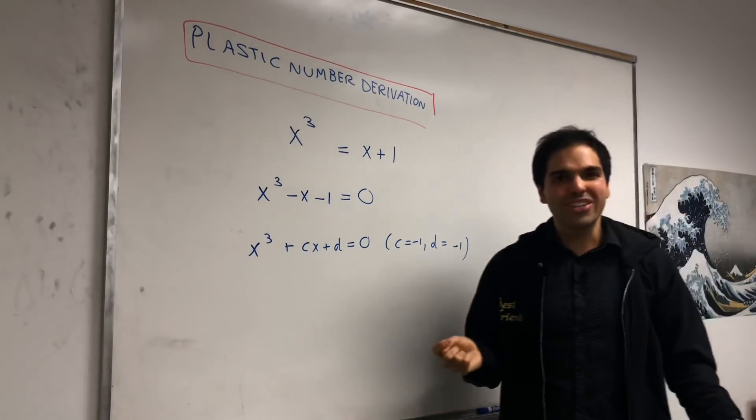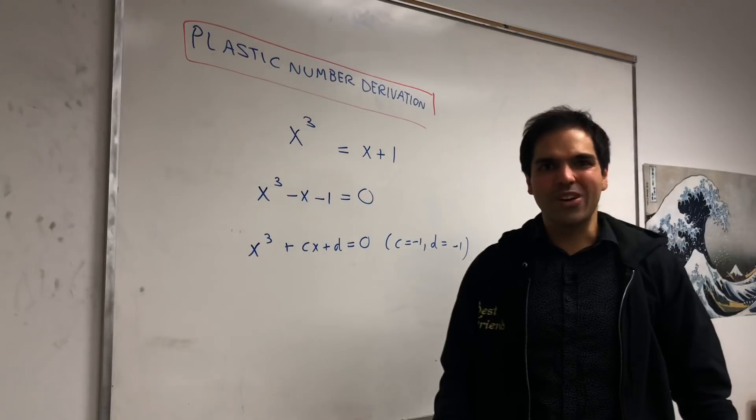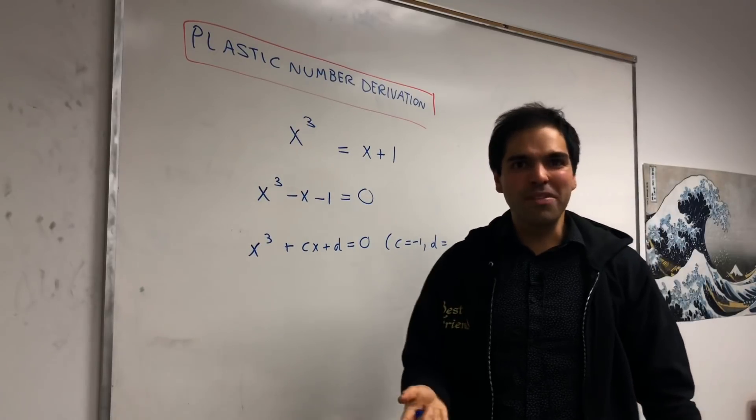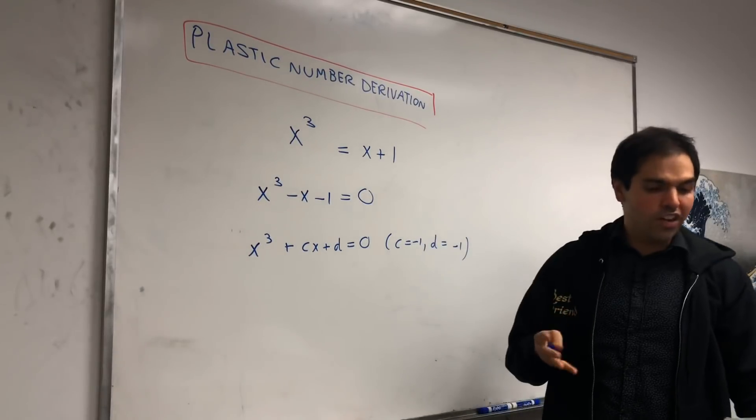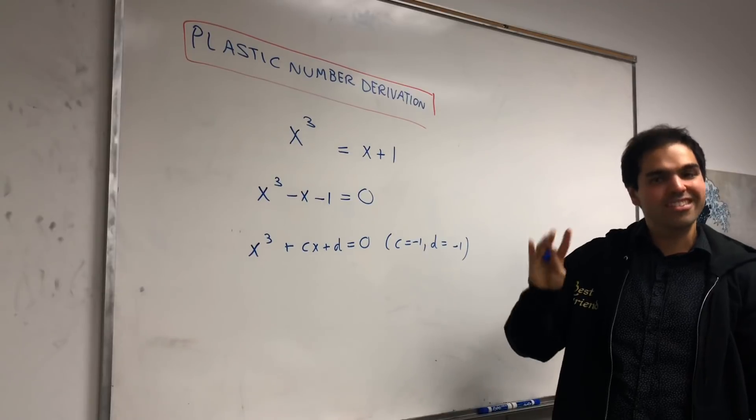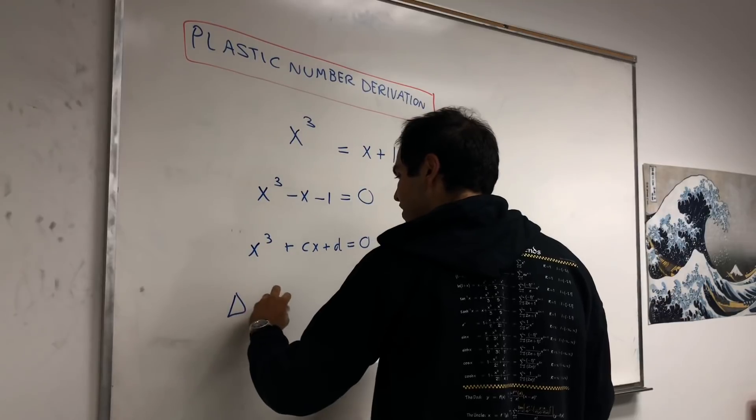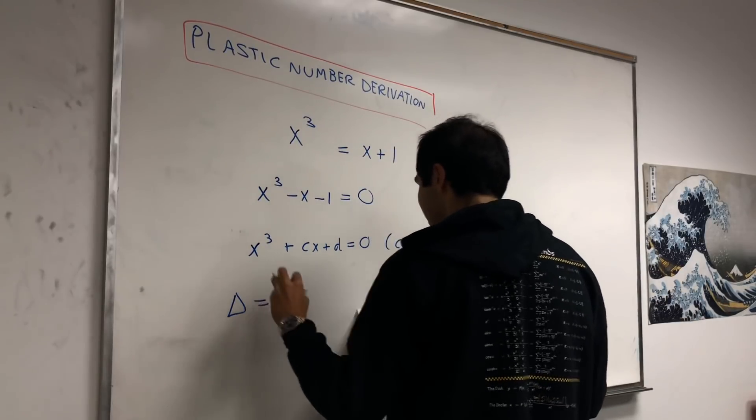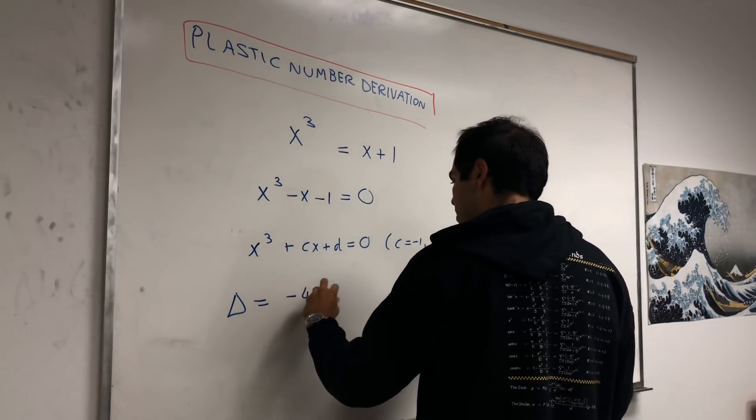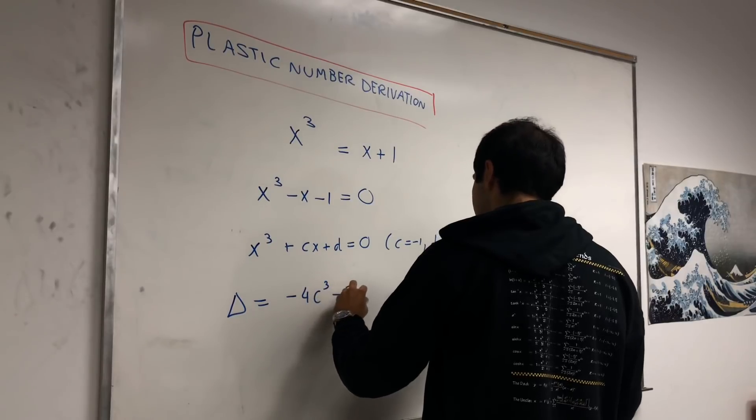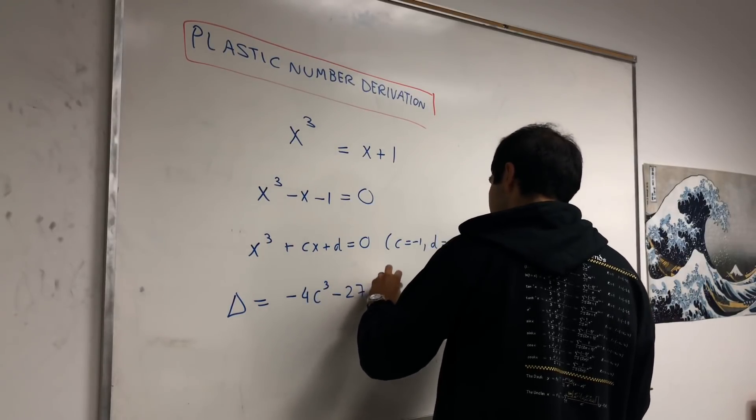And the reason I do this is because it turns out there's an explicit formula for the solution of this. And the interesting thing is, for quadratic equations, we use the discriminant. Here, it turns out there are three discriminants to watch out for. So, first of all, the main one, the principal discriminant, minus 4c cubed minus 27d squared.